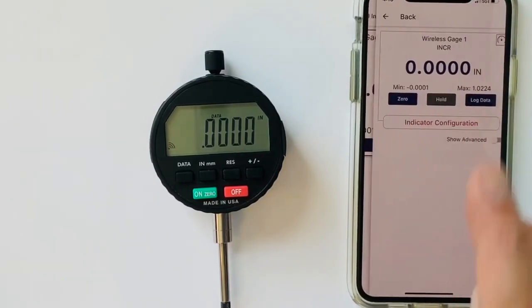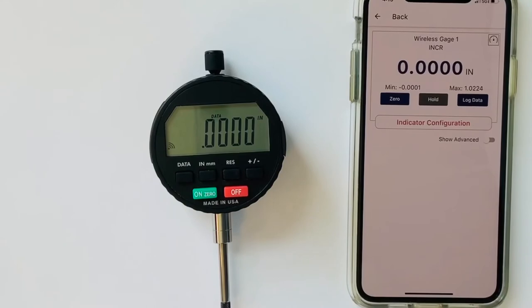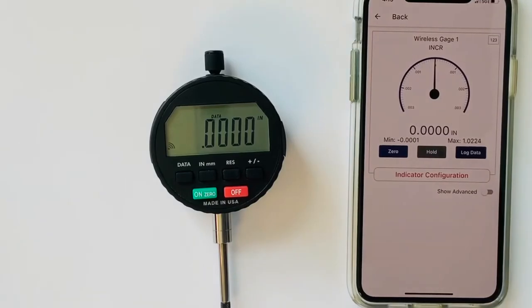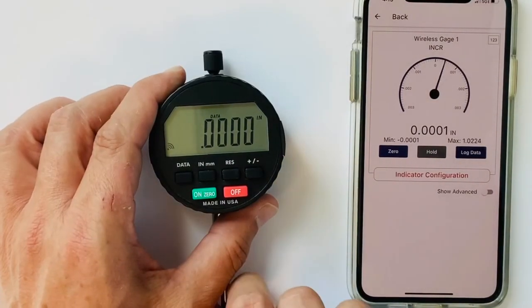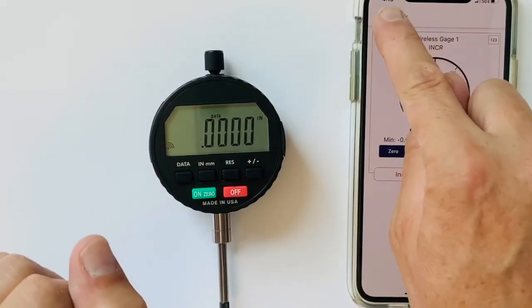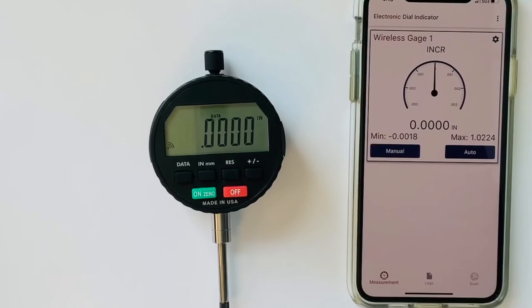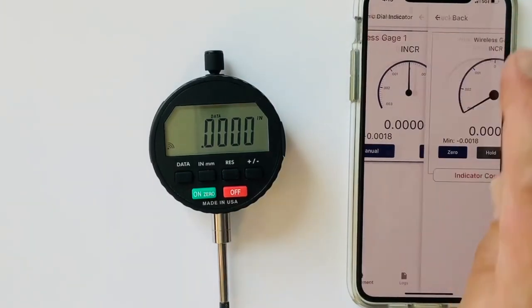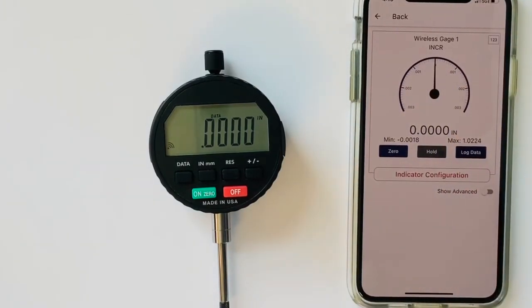You can hit this gear button here. It goes into indicator configurations. Here you can change the display. Let's say we want a more analog display. More like a mechanical indicator. And if we set it there, it will carry back to the main display. Once again, I'll hit that gear. Go into indicator configuration.